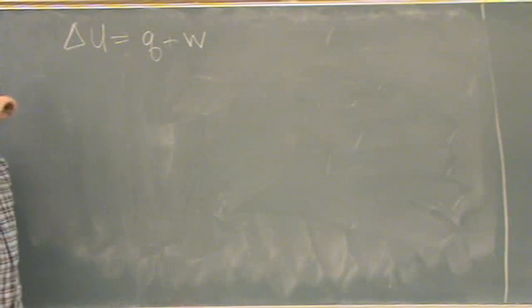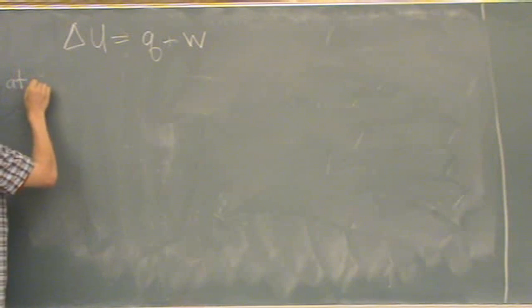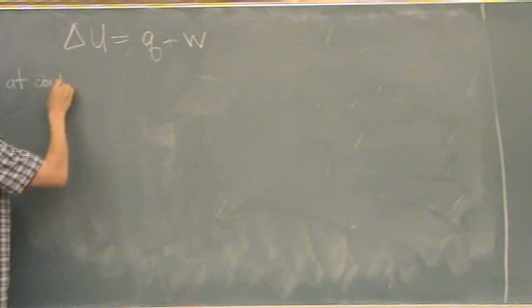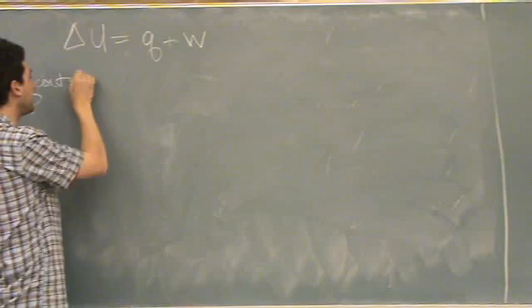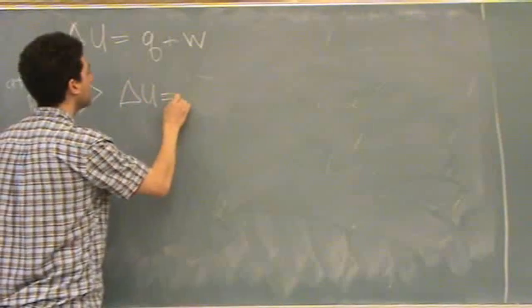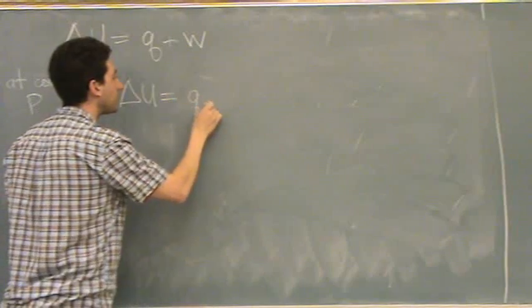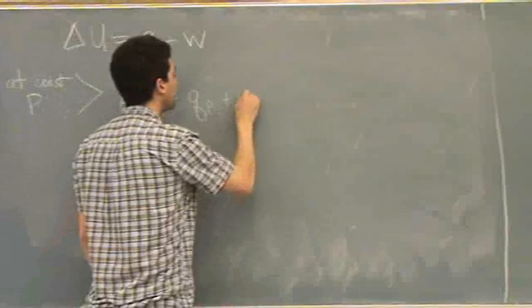So then what we did is we said, well, at constant pressure, which our world is commonly at constant pressure, so this is a good assumption for us to say, or a good case for us. Delta U equals Q, and we'll just put a little P there to remind ourselves it's at constant pressure, plus W.